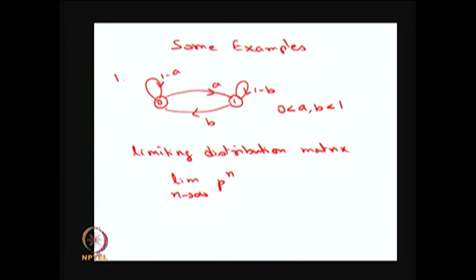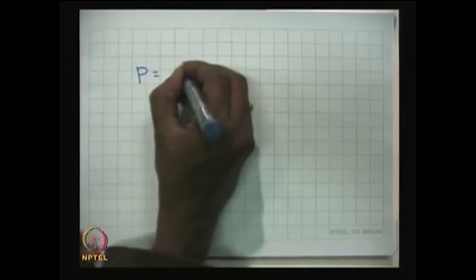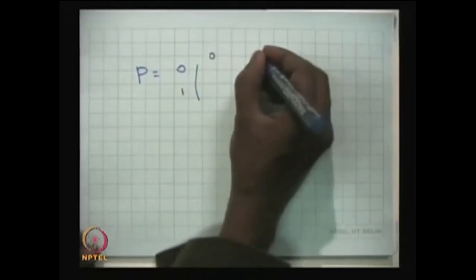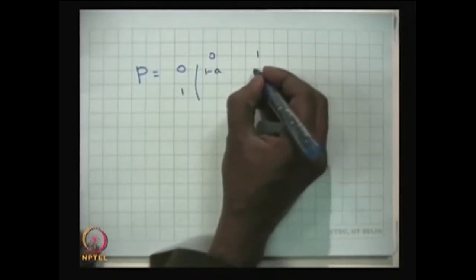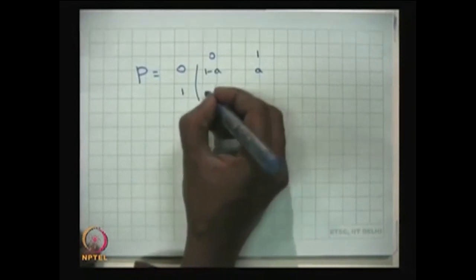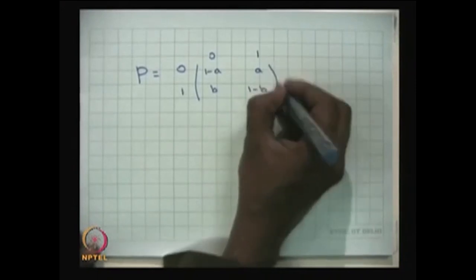This two-state model can have many more applications interpreted with the transition probability. This is a one-step transition probability matrix P, where state 0 to 0 has probability 1 minus A, state 0 to 1 has probability A, state 1 to 0 has probability B, and state 1 to 1 has probability 1 minus B.